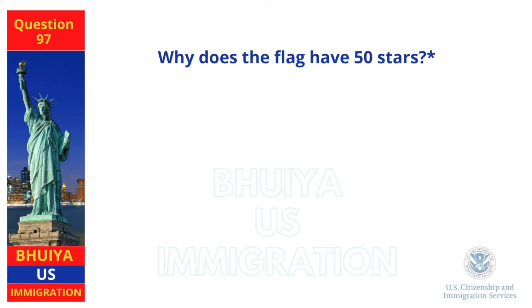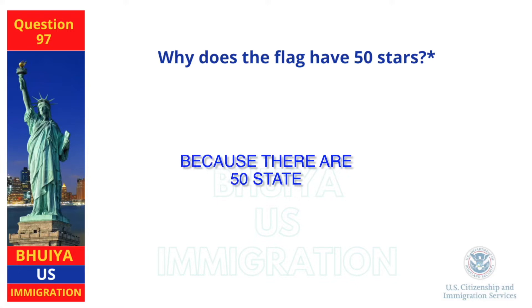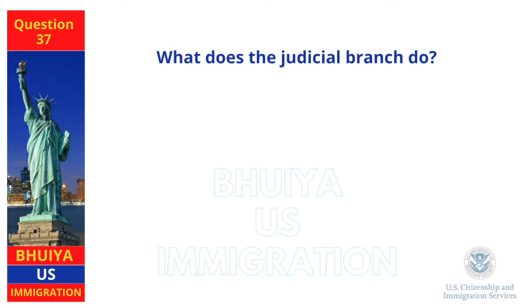Why does the flag have 50 stars? Because there are 50 states. What does the judicial branch do? Reviews laws.